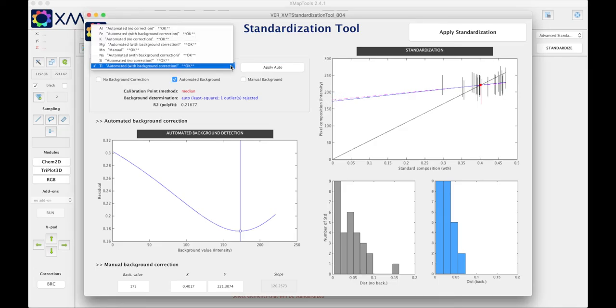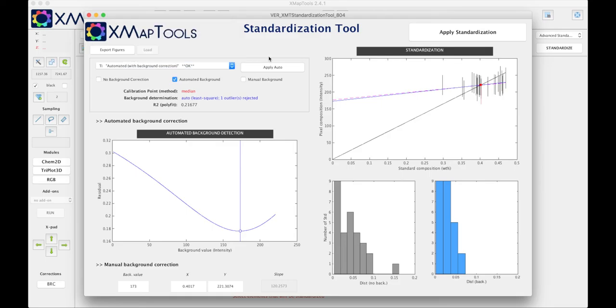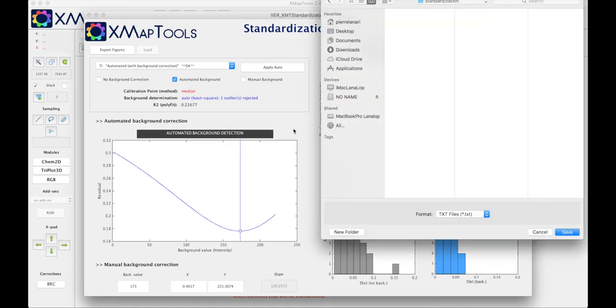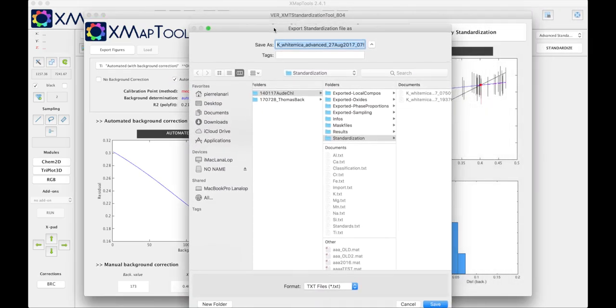When you are done all the elements should be written okay, which means that we defined a calibration curve. When it's okay you can press the button apply standardization and the program will close the standardization tool. It is possible to export the standardization parameter by clicking on yes. In this case you can save this parameter.